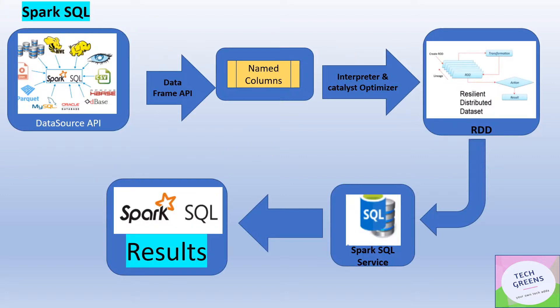Let's understand how Spark SQL works using this diagram. The first component is the Data Source API, which facilitates connecting, reading, and writing data from different sources — Hive, NoSQL like Cassandra and HBase, HDFS file systems in formats like Parquet or Avro, and relational databases like MySQL and Oracle. Data is onboarded and read from all these sources with the help of Data Source APIs and libraries.